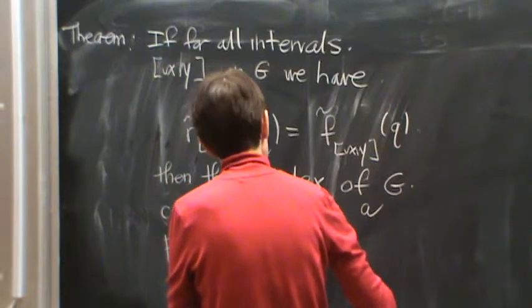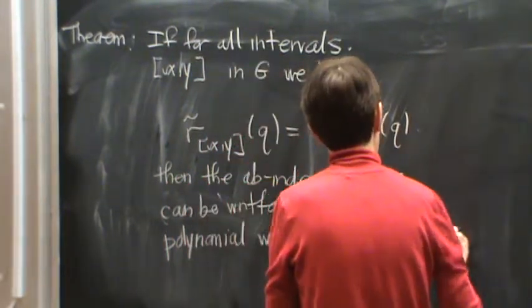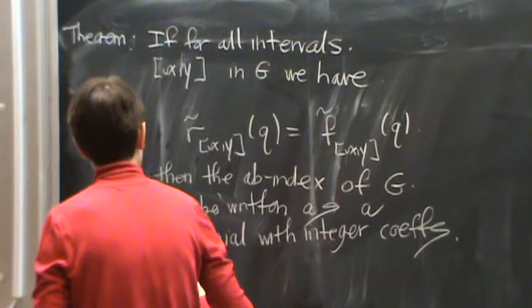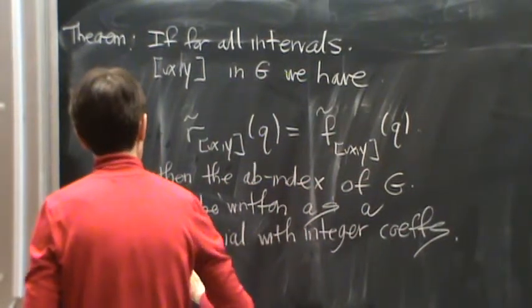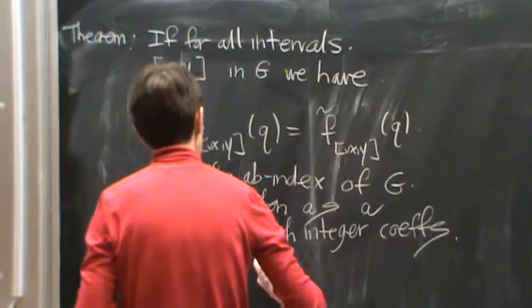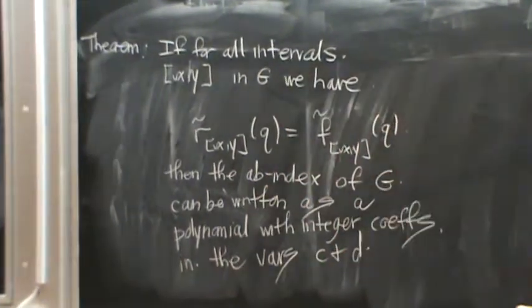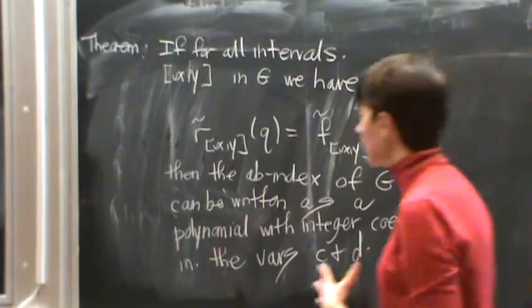as a polynomial with integer coefficients, this is actually important, this integer. Let's see why I know that, along with integer coefficients in the variables, non-commutative variables, c and d. So let's first say something about this condition. r tilde is equal to f tilde on every interval. What does that mean?